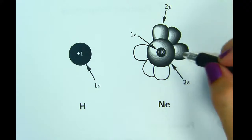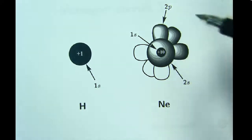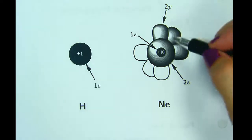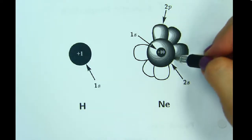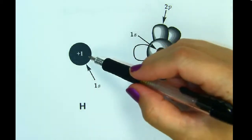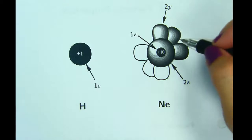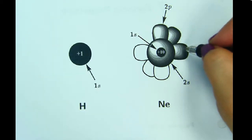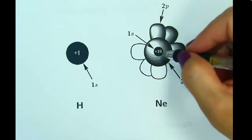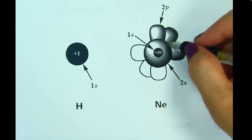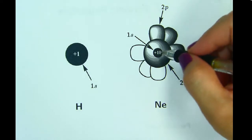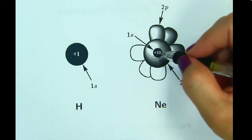Neon is bigger than helium for two reasons. One, neon has an energy level 2, which makes it larger than just energy level 1. Two, because of the screening of the 2s and 2p electrons from the 1s electrons, these outer electrons are allowed to spread out more because they are screened from the nucleus by the 1s sub-level.